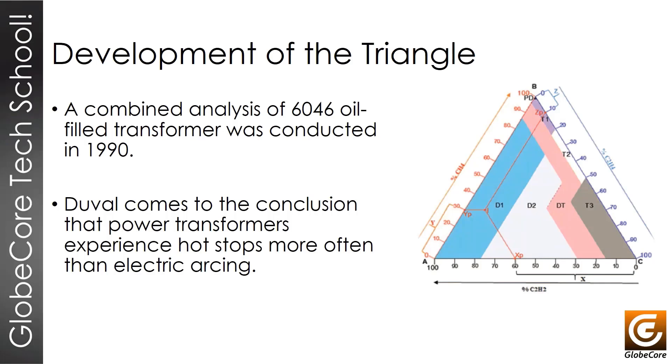The method was first presented in 1974, and although at that time it was not perceived as a triangle, Duval demonstrated three specific features. Duval concluded that hydrogen dissipates on metal and other points of the transformer, so he decided to use three hydrocarbon components, specifically methane, ethylene, and acetylene, and thus he developed his triangle.